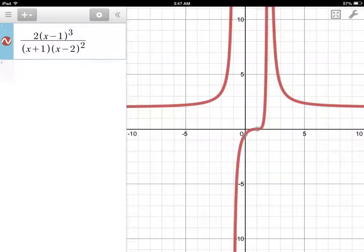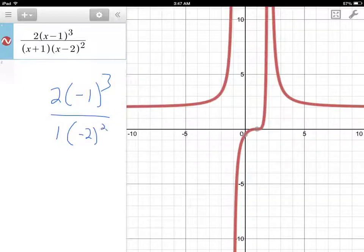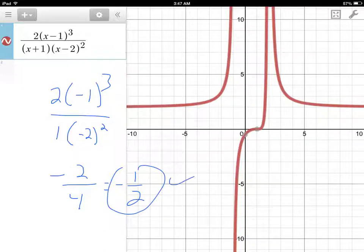Looking at this graph, it looks like I have exactly the same thing. I'm noticing the y-intercept is negative 1 half. I can check by substituting x equals 0. That would be 2 times negative 1 cubed over 1 times negative 2 squared, which equals negative 2 over positive 4, which is negative 1 half. That certainly looks like it works.